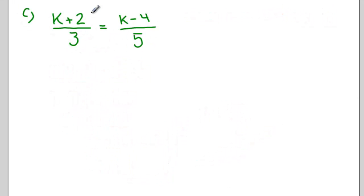Okay here I have a question where I end up with a fraction on both sides. k plus 2 all over 3 equals k minus 4 all over 5. I can make this way simpler on myself if I start by cross multiplying. So multiply the right hand side by 3 and the left hand side by 5.